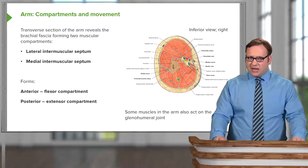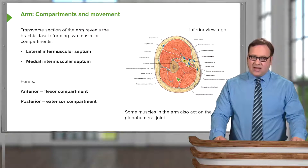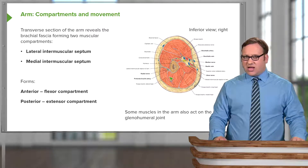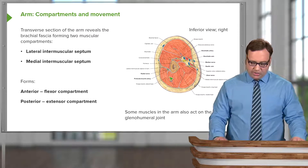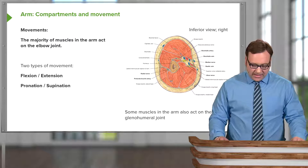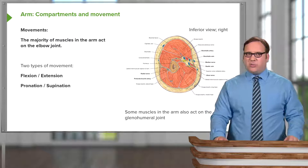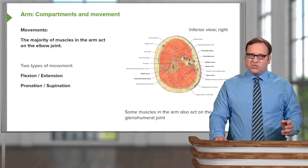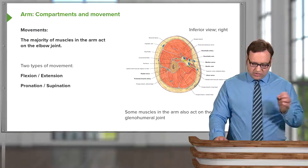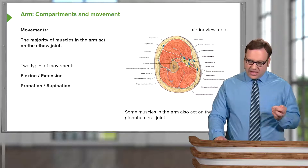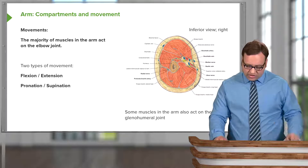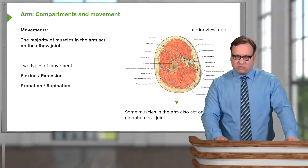The anterior compartment is the flexor compartment and the posterior compartment is the extensor compartment — muscles that flex and extend the elbow joint respectively. Importantly, some of these muscles also act on the glenohumeral joint. The majority of muscles in the arm act on the elbow joint, and principally there are two types of movement: flexion and extension. We also have pronation and supination, as the muscles within the arm act on the radio-ulnar joints, which allow pronation and supination to occur.